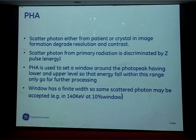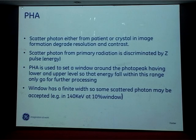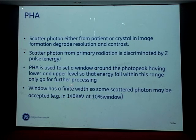Scatter from photons degrades image resolution and contrast. Scatter from primary radiation is discriminated by its pulse energy. The PHA sets a window around the photopeak — the main gamma energy that the particular radioisotope emits — with lower and upper levels so that only energy falling within this range goes for further processing. For technetium, which is commonly used in gamma camera studies, the peak is 140 keV. We set a 10% window, so from 130 to 150 keV, only energy within that range is accepted for image formation.